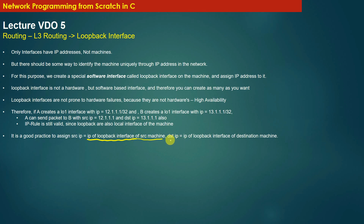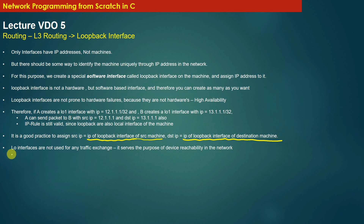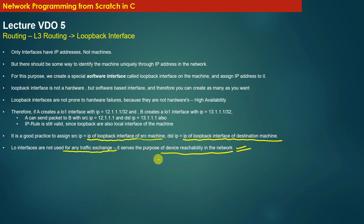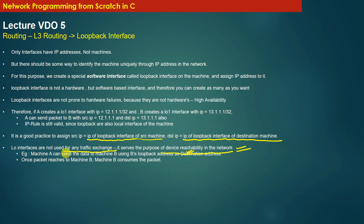It is good practice to assign the source IP address as the loopback IP of the source machine and the destination IP as the loopback IP of the destination machine. Loopback interfaces are not used for traffic exchange — they serve the purpose of device reachability in the network. Loopback interfaces cannot transmit or receive traffic from other nodes, but a remote machine can send a packet using the loopback address as the destination IP.